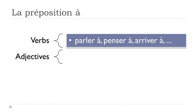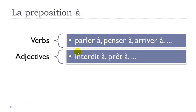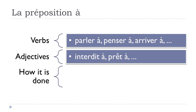You can also combine this preposition À with adjectives. For instance: 'interdit à' — 'interdit' means forbidden — and 'prêt à' — 'prêt' means ready. In that case you should combine these adjectives with the preposition À.